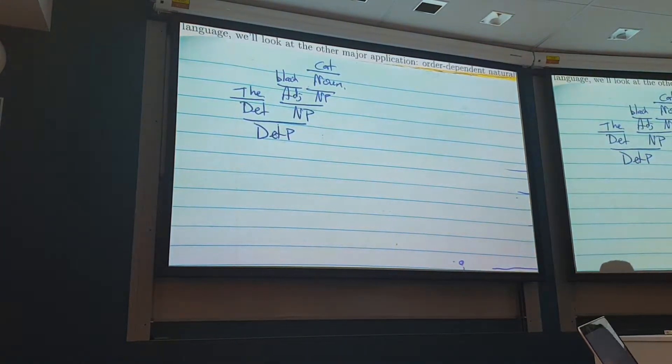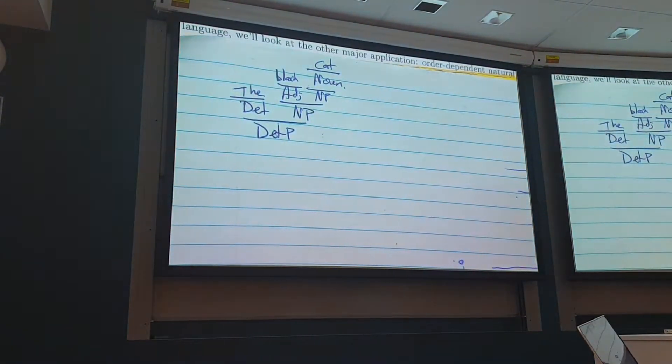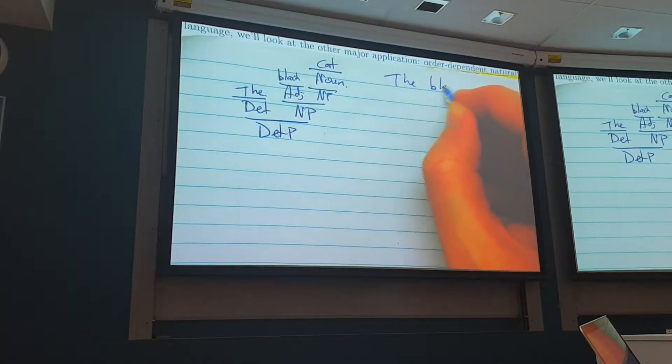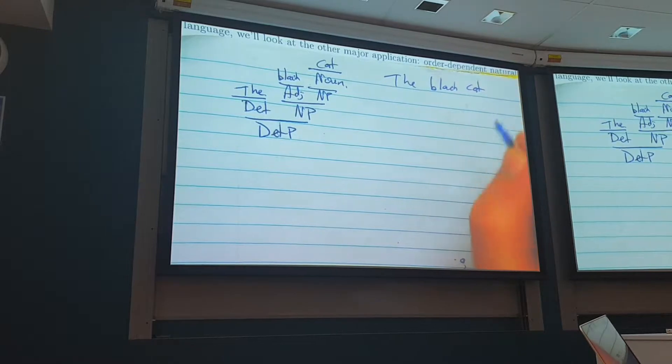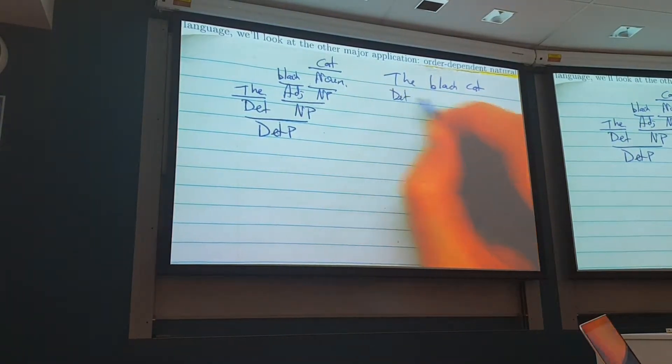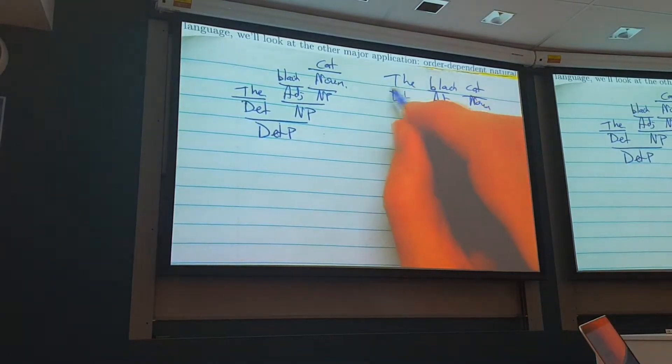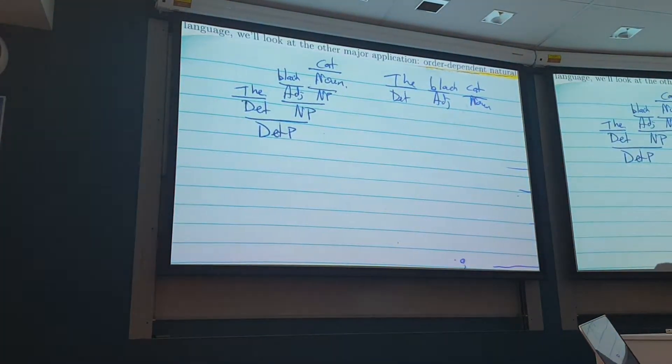So I started from the bottom up. That's unnatural. What you would actually do is start from the, black, cat. Say, the is a determiner. Black is an adjective. Cat is a noun.